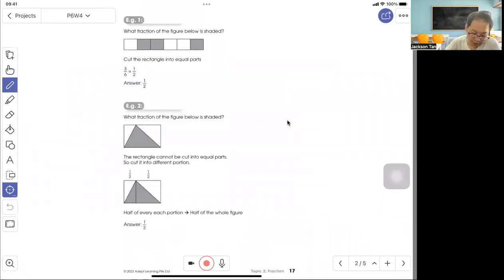Example 1: What fraction of the figure below is shaded? There are 1, 2, 3, 4, 5, 6 parts total. 1, 2, 3 are shaded. The rectangle is cut into equal pieces, so 3 out of 6 equals 1 out of 2.